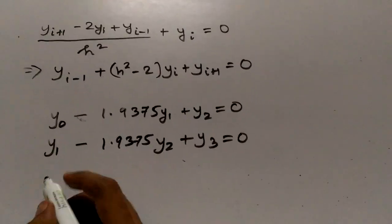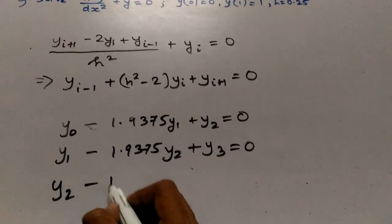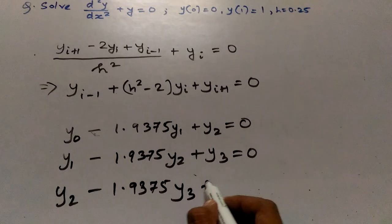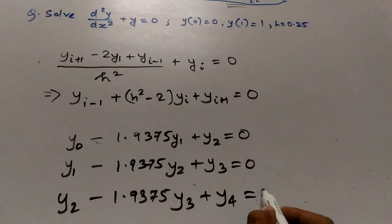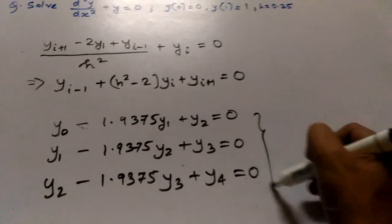Similarly, the next equation will be y_2 minus 1.9375 y_3 plus y_4 equals 0. So this is our system of linear equations.